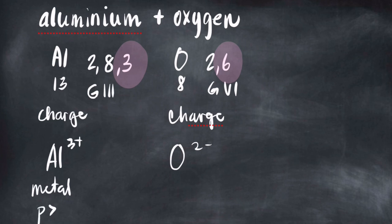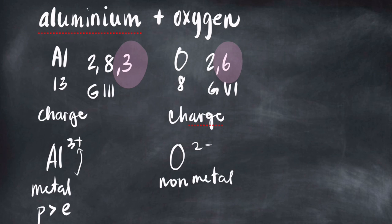Remember: metals want to give away electrons. Therefore when they give away electrons, the number of protons will be greater than the number of electrons, giving them a positive charge. Non-metals, on the other hand, want to take electrons, so the number of protons will be less than the electrons, giving them a negative charge.